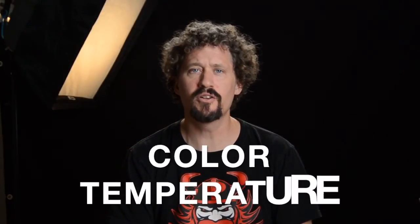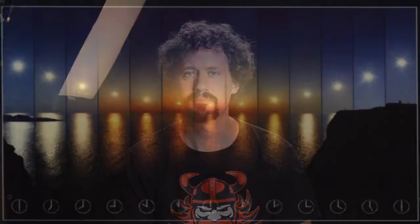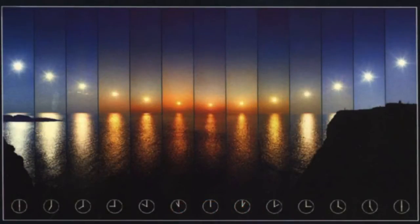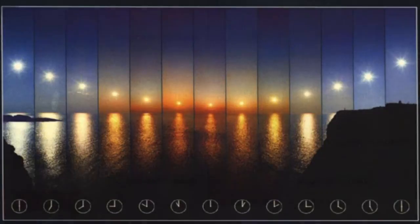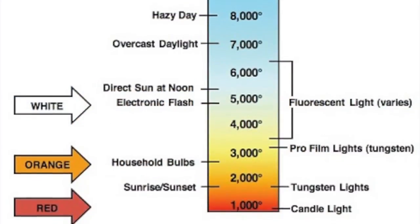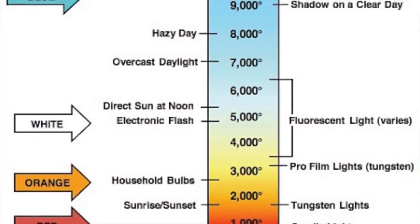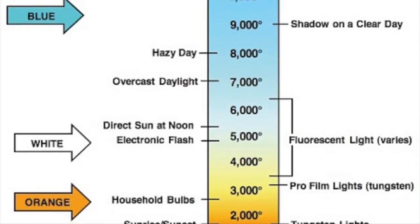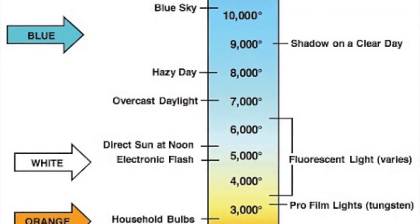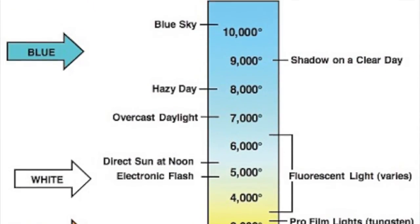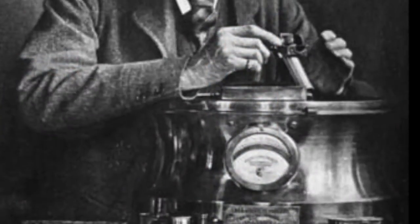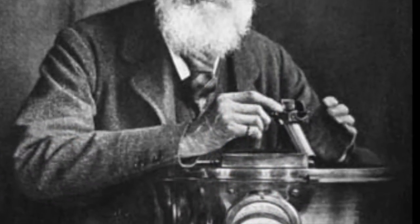Color temperature is another character of light. This is where the color of light changes in varying degrees. Basically, it starts as a red color, moving through orange, then to a yellow, up through white, and finishing in a blue. A scale of numbers was developed by Lord Kelvin to codify these changes of light's color qualities as the temperature of a heated black body changed. It's called the Kelvin scale.